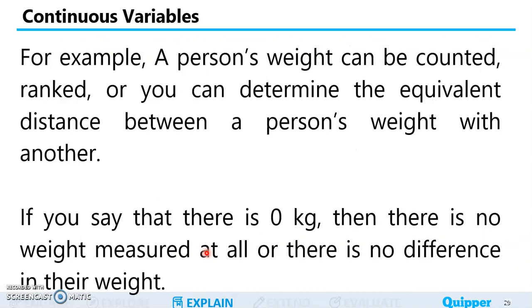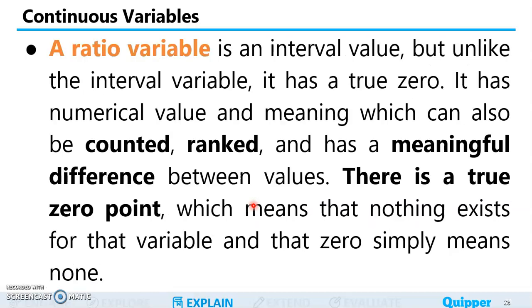For example, a person's weight can be counted, ranked, or you can determine the equivalent distance between a person's weight with another. So if you say that there is zero kilogram, then there is no weight measured at all or there is no difference in their weight. If you're comparing a person's weight with another person's weight, and if there is zero kilogram, meaning there's no difference. So there is a true zero point or true zero value. So that is ratio variable.